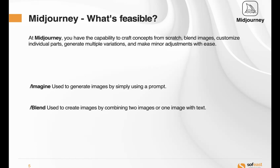Typically you're going to use prompts to craft concepts from scratch, blend images, customize individual parts, generate multiple variations, and make small adjustments really easily — a lot faster than doing it by hand. We use forward slash imagine, which generates images based on what you're telling it, and then forward slash blend, which combines two images or images with text.